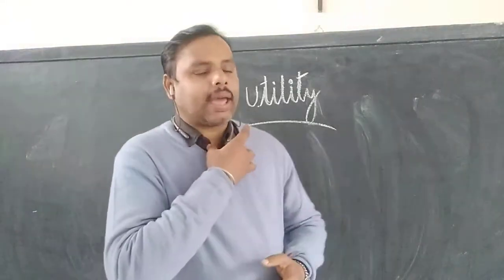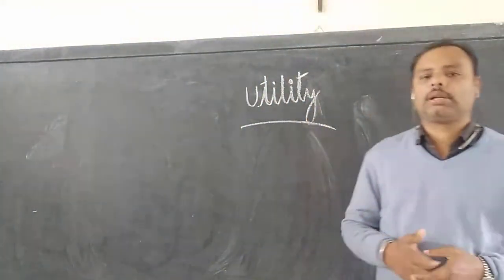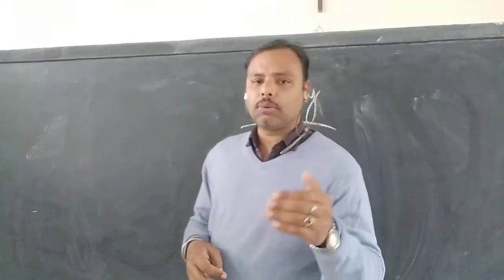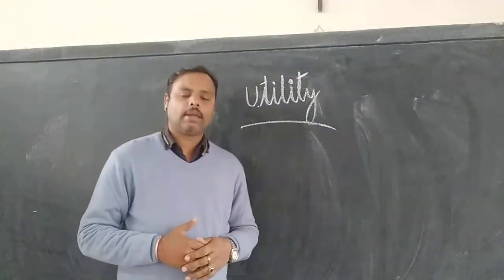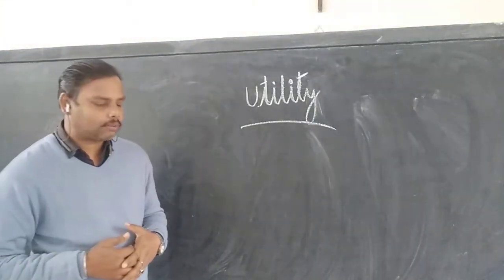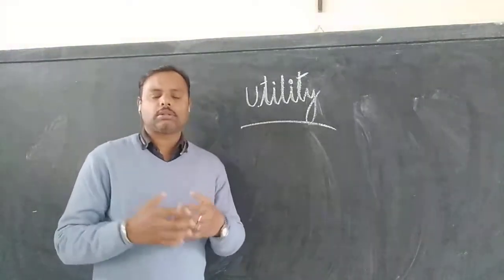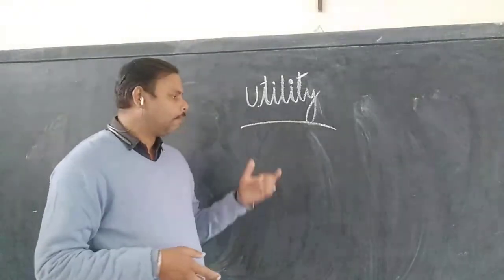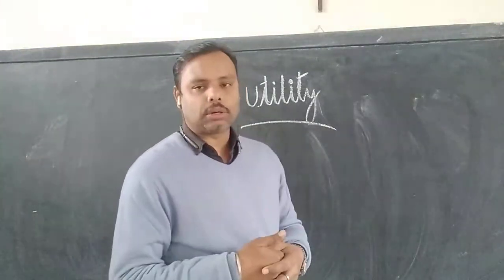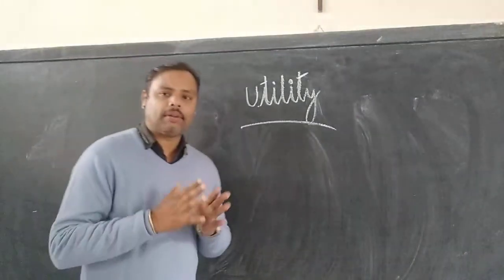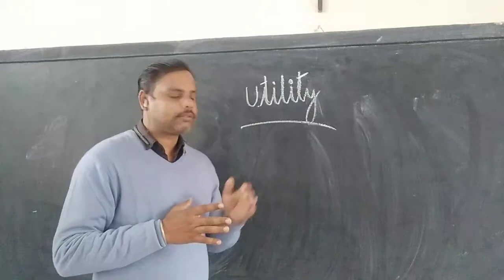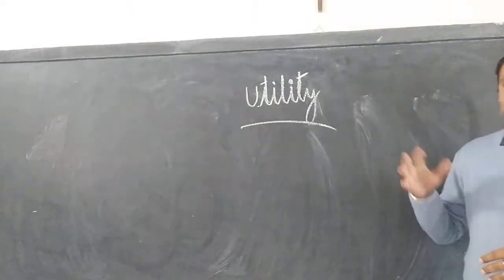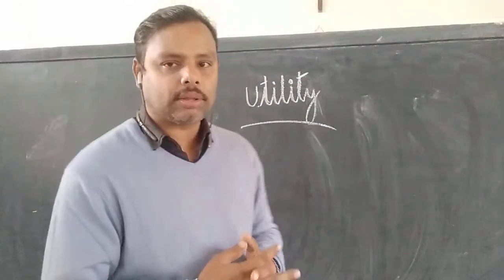What are the characteristics of utility? The first one is utility is subjective. Utility is subjective means it differs from person to person, place to place, and time to time. For example, if a product XYZ gives you 10 utils of satisfaction, I may derive a higher level of satisfaction — say 15 utils — compared to your 10 utils. So the level of satisfaction we get from a product varies from person to person, place to place, time to time, and season to season. That is why utility is called subjective.